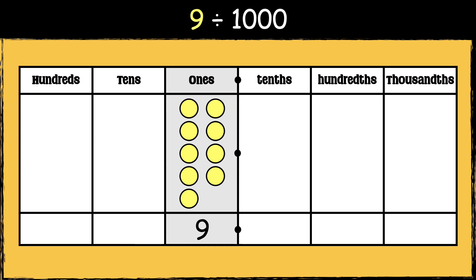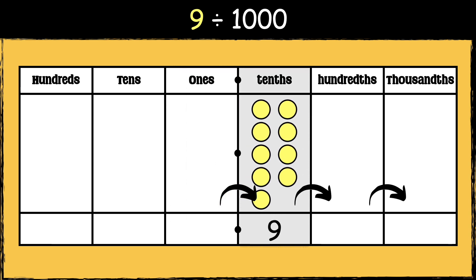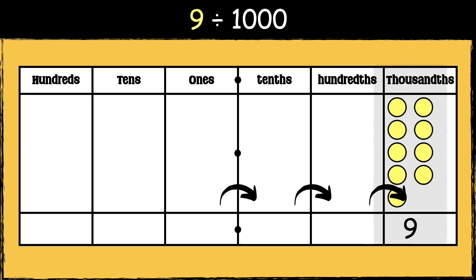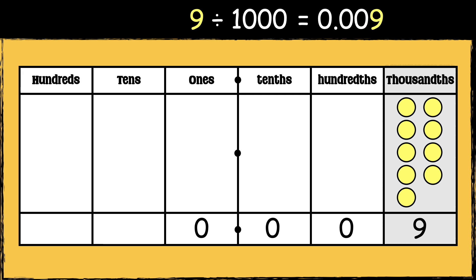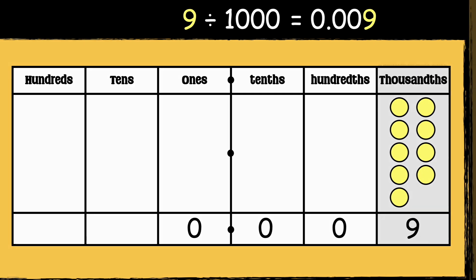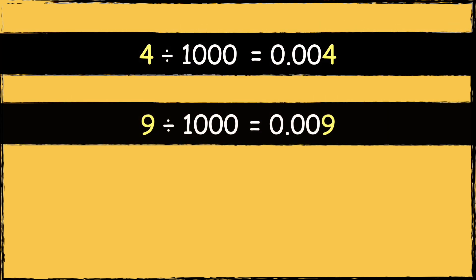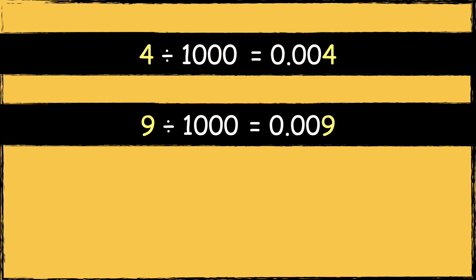Here's the next example: nine divided by a thousand. We need to move the digits three places to the right, so nine becomes nine thousandths. We need to use zeros as placeholders to show that there are no ones, tenths, or hundredths, so the answer is zero point zero zero nine.